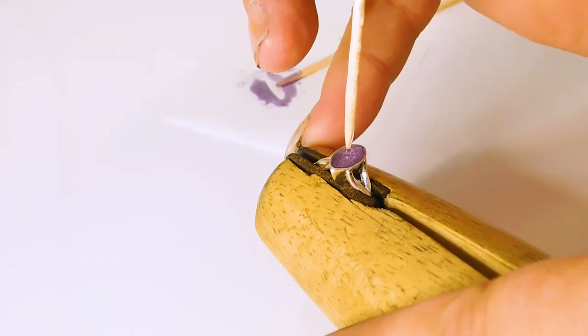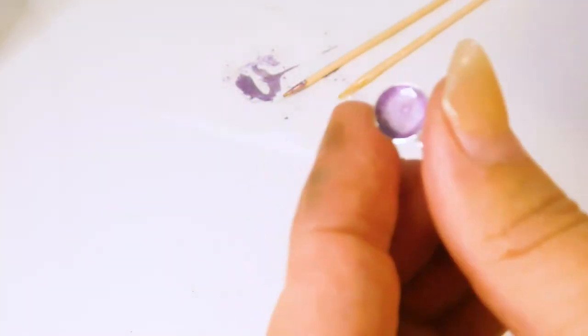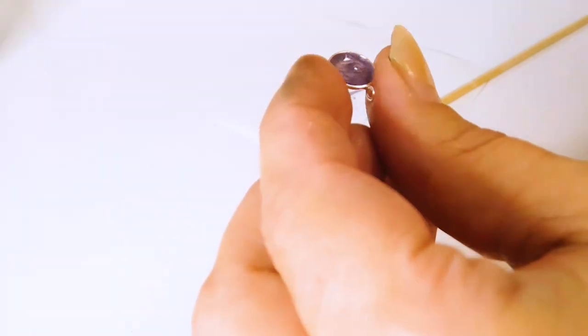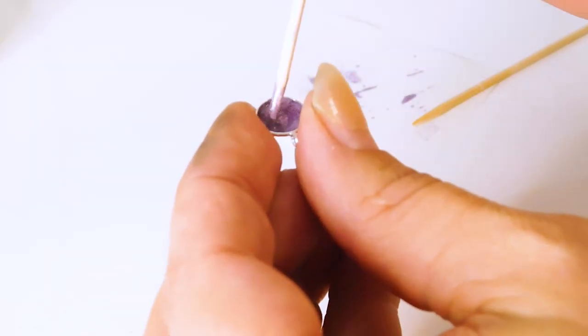Cure it, making totally sure it is completely level. Whilst it's curing, do another coat of color in the bezel cup. I like to make a swirl starting from the edge and working in, immediately before putting it in the lamp to cure.